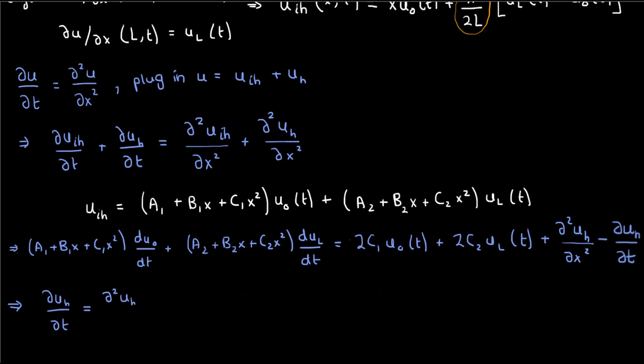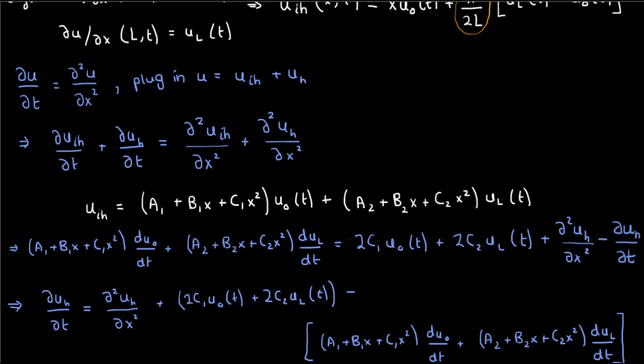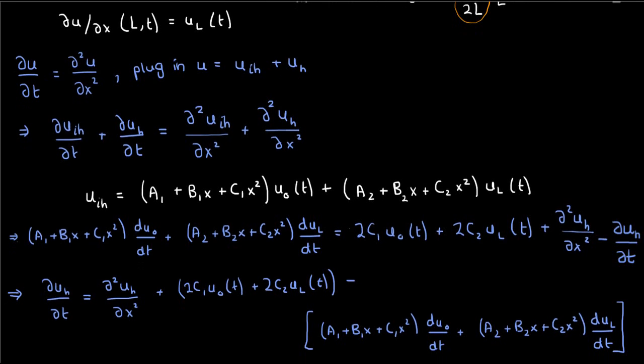If we rearrange this equation, then we'll get a PDE that isn't particularly pretty. Instead of fully taking out the non-homogeneous part, we've actually transferred it into the PDE itself. This wasn't a problem when we had constant Dirichlet boundary conditions last time, because in that case these time derivatives would cancel.